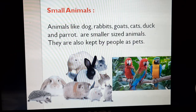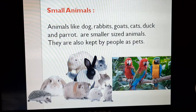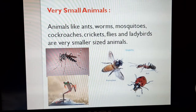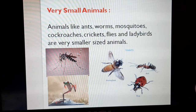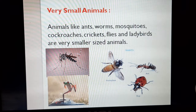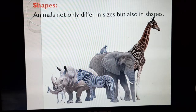Some animals are kept by people as pets. Some of you must be having dogs or even parrots as pets. Very small animals are ants, worms, mosquitoes, cockroaches, crickets, flies, and ladybirds.